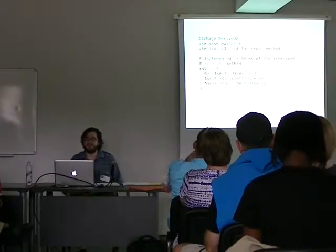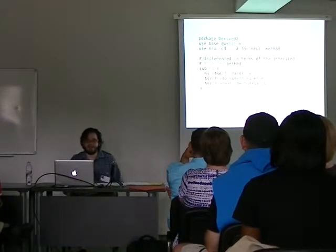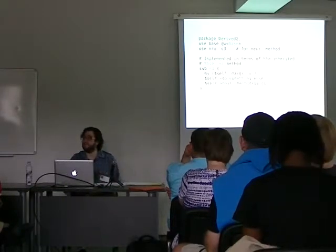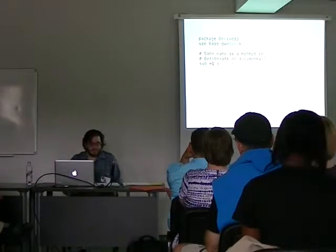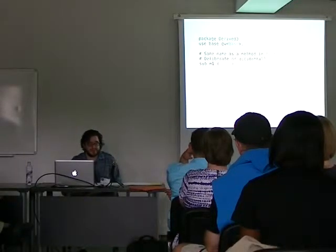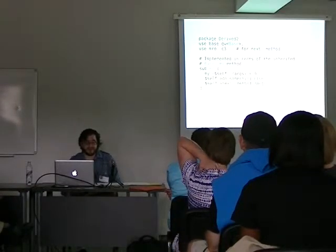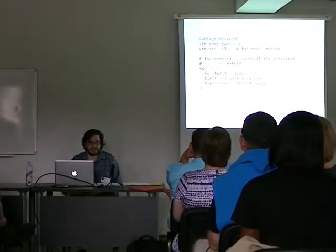So if our Derived2 class inherits from Base and has a new method M1 which uses next::method to delegate back to the original, then clearly the programmer knew what they were doing. The tricky case is something like this: we've got our Derived3 class which inherits from Base, and it's got another method called M1 — and we can't tell whether that was deliberate or accidental overriding. There just isn't enough information there. And for that matter, even with the M1 in Derived2 which uses next::method to extend the behaviour, it's quite hard to observe from the outside that that's what you're trying to accomplish. So it seems that we need more precision in describing our classes.